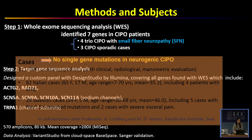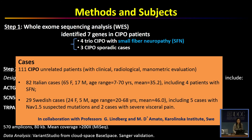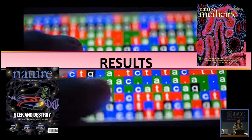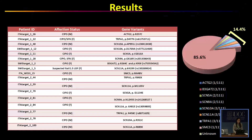We included 111 cases in this study — CIPO and related patients with clinical, radiological, and manometrical evaluation — which include 82 Italian cases and 29 Swedish cases in collaboration with Professor Lindberg and Professor D'Amato at Karolinska Institute. This table shows the list of gene variants that we found after the target panel, with an overall mutation frequency of about 14.4%, as you can see from the graph.